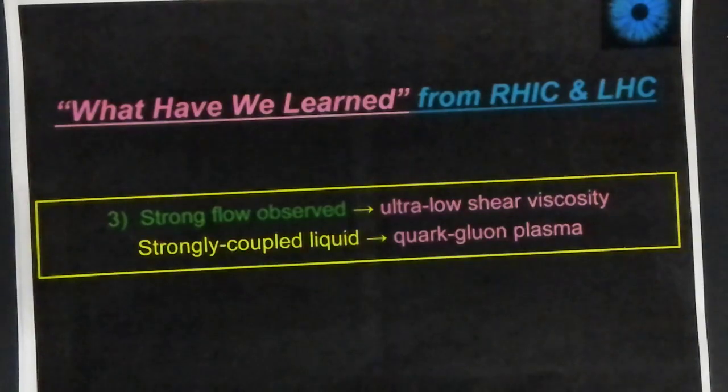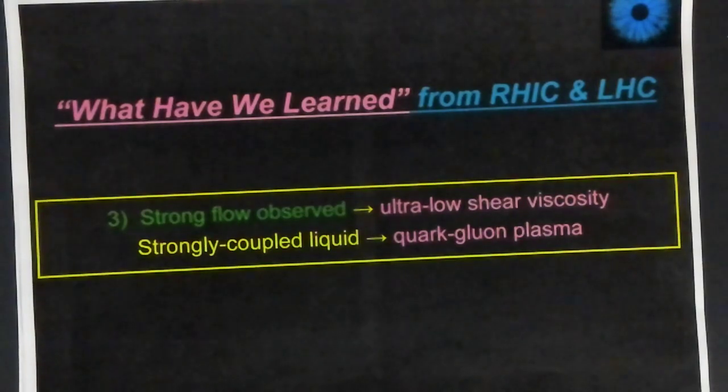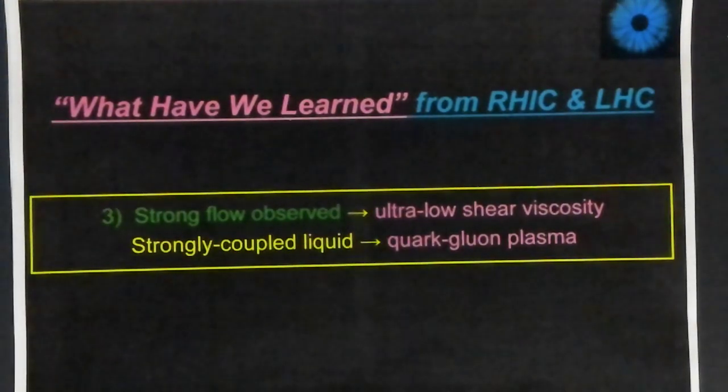That may sound a bit odd to talk about flow, since we know there's just a whole bunch of particles coming out of this collision, but it turns out that the quark-gluon plasma that's formed in the early stages of the collision actually behaves more or less like a liquid. So it flows like a liquid, and so we can apply hydrodynamics.